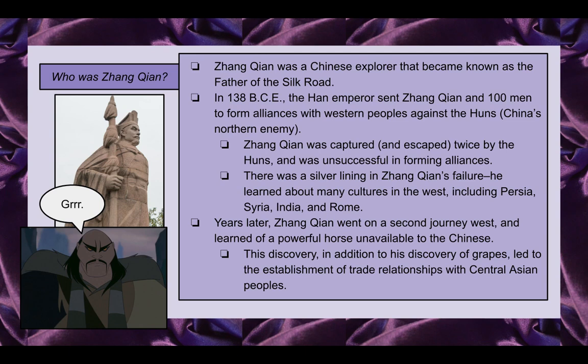Years later, Zhang Jian went on a second journey west and learned of a powerful horse unavailable to the Chinese. This discovery, in addition to his discovery of grapes, led to the establishment of trade relationships with the Central Asian peoples.